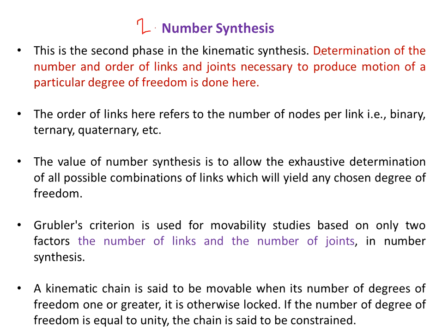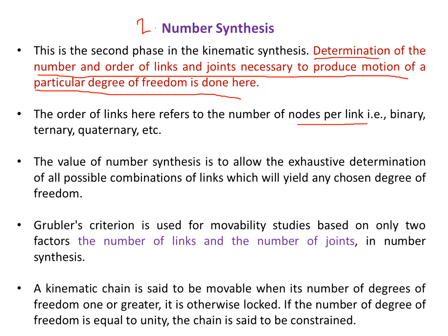The second phase is number synthesis. Here you are supposed to determine the number and order of links and joints necessary to produce a motion of a particular degree of freedom. The number of links and order of joints should produce the degree of freedom desired. Order of the links refers to number of nodes per link — whether binary, ternary, or quaternary. Binary means two links at a joint, ternary means three, and quaternary means four. Number synthesis allows exhaustive determination of all possible combinations of links yielding any degree of freedom.